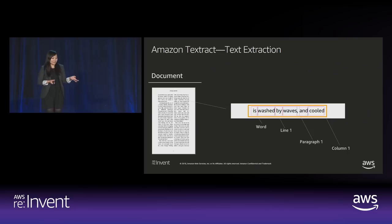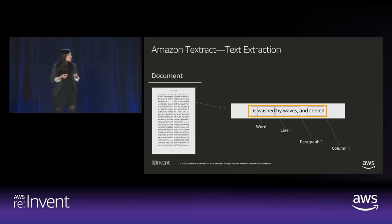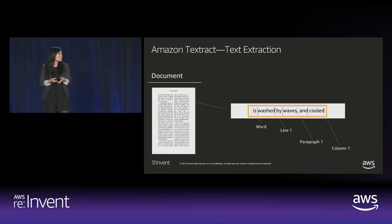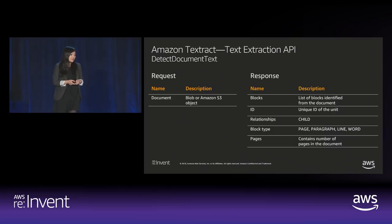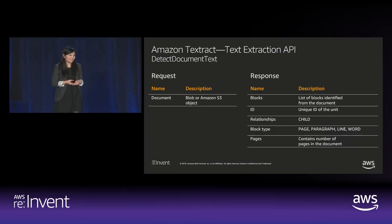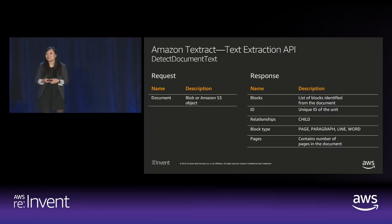When you look at a two-column document, our smallest building block is the word. We build upon that to the line, paragraph, and column. This gives people the power to control these groupings to the level that suits their specific use case. One use case is NLP, where this is very useful for understanding the reading order of a document. To get text extraction from Amazon Textract, you use the DetectDocumentText API — providing an image or PDF, including multi-page PDFs, as a blob or an S3 object location — and you get blocks and their relationships.